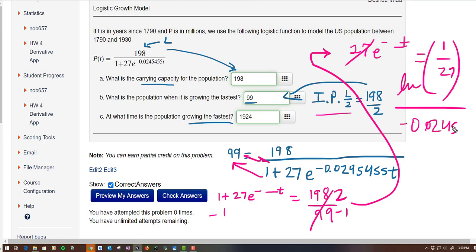And then I divide by this big old negative 0.0245455. I do LN of one divided by 27 divided by negative 0.0245455. I get about 134.